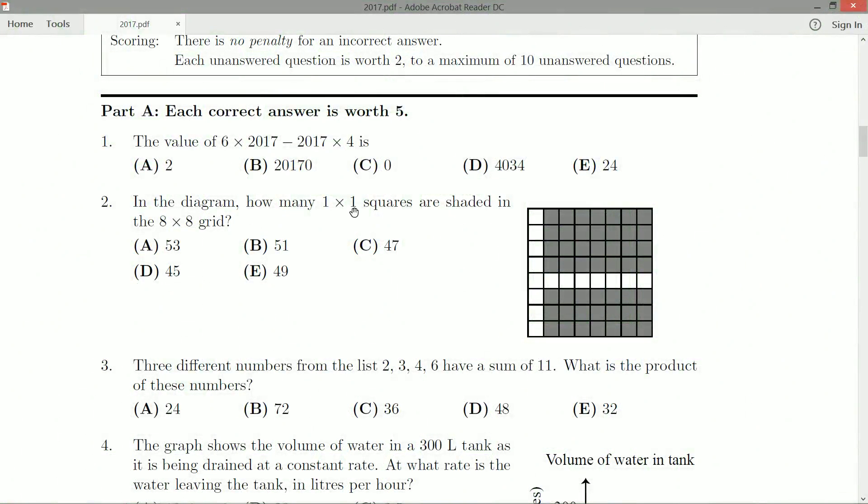In the diagram, how many 1x1 squares are shaded in the 8x8 grid? So it looks like we have one column and one row that is unshaded, and I think it'd be easier—I mean there's lots of ways to do this one—but I think it'd probably be easier to count the unshaded ones and subtract it from the total 8x8, or 64.